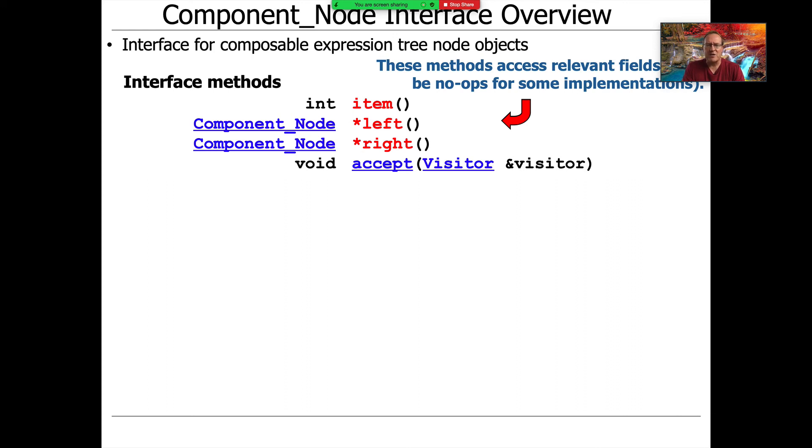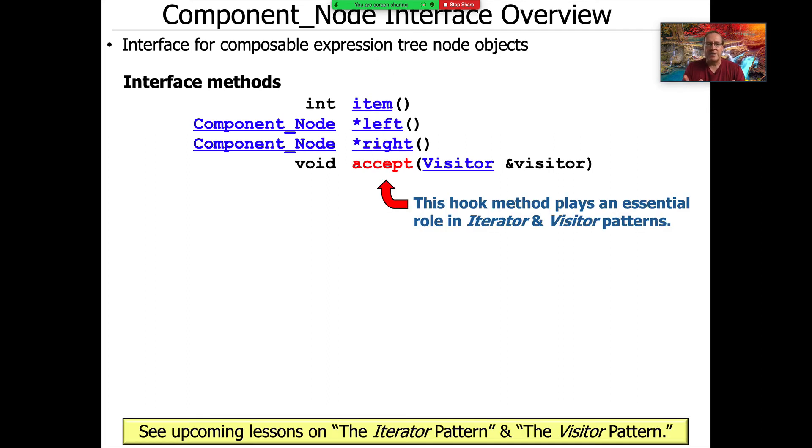So as you'll see, these methods are used to access various fields or data members. And in some implementations, they're no ops. So, for example, for a leaf node, there is no left child. There is no right child. So those things will just return null and everything will be fine. The accept method is a very interesting method. We won't dwell on it at the moment, but it plays a very essential role in some upcoming patterns, namely the iterator and visitor pattern. And we use this method in order to be able to add or provide a hook to add arbitrary operations to our expression tree. And this is that whole wonderful idea of being able to make changes and add capabilities without breaking what's already there, which is really awesome. We'll come back and talk about these patterns in more detail shortly.